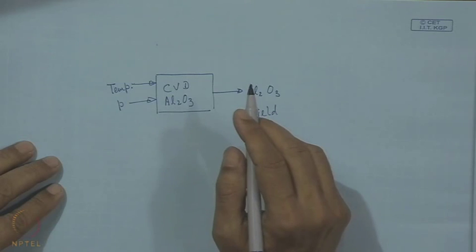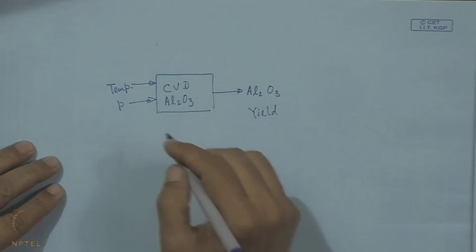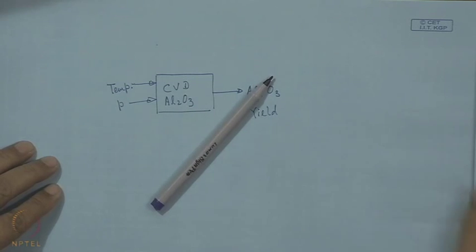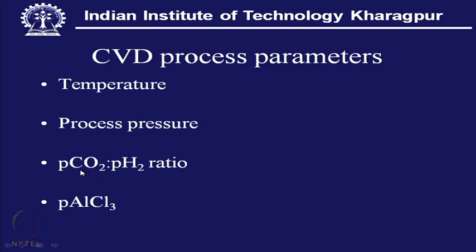In addition, since CO₂ and hydrogen are admitted into the reactor at certain temperature and pressure, and AlCl₃ vapor is continuously generated and admitted, all six of these are process parameters that dictate the final outcome — the Al₂O₃ coating yield.